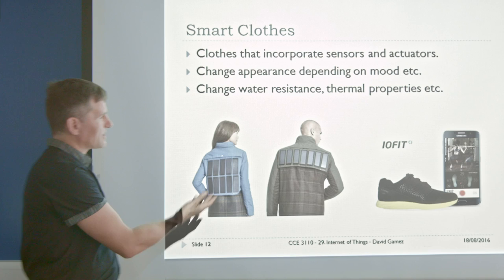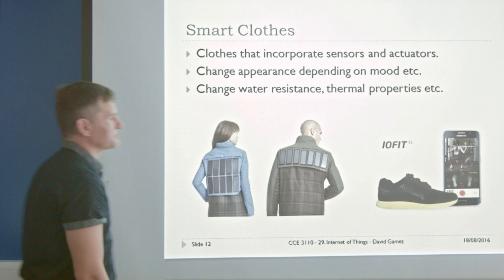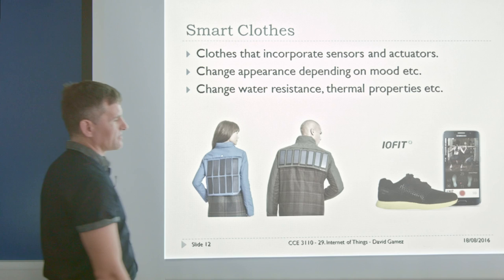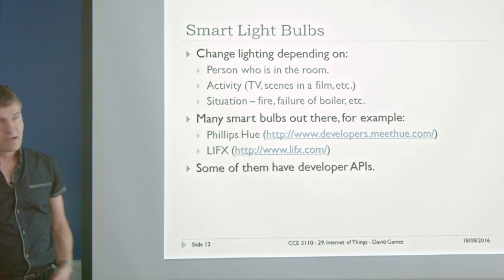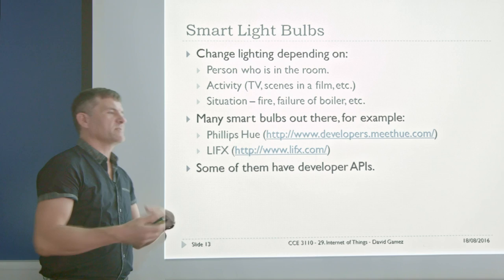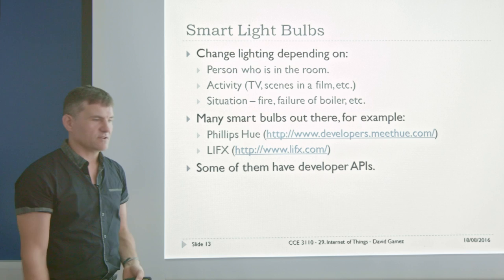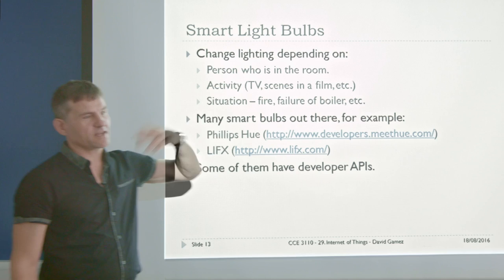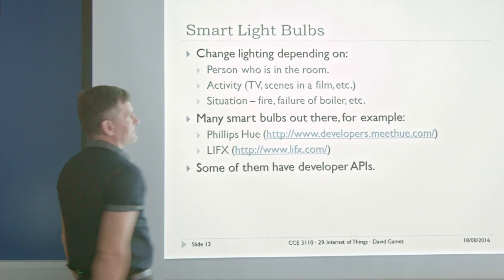Then we've got smart clothes — maybe clothes that reflect your mood, going red when you're feeling hot, blue when you're feeling down, changing thermal properties in response to environmental changes. Smart light bulbs are something almost every company has developed because it's sort of the simplest thing to do. If you've got a smart light bulb, you can change the lighting depending on the person — Uncle Ted likes soft lighting, Auntie Mary likes hard lighting for knitting. You can have lights flash dramatically in an action film or give soft shifting patterns for a rom-com.